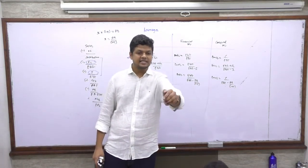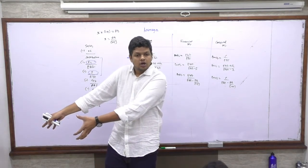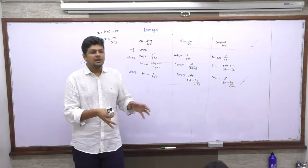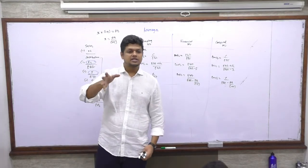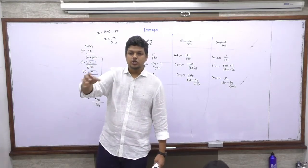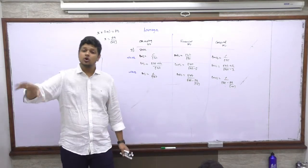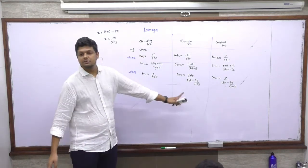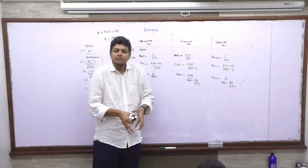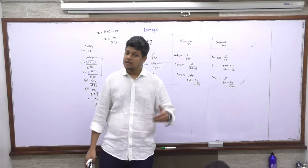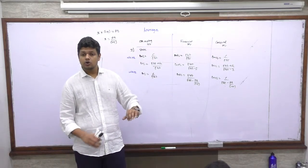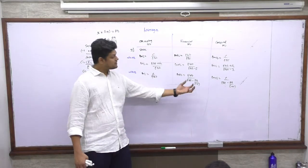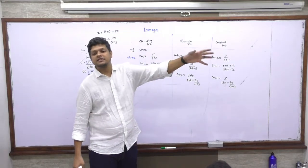Everything else is pre-tax except preference dividend which comes from the post-tax amount. I have two choices: bring everything post-tax, which doesn't make sense because tax will hide the impact of leverage; or bring everything pre-tax. So I bring preference dividend to pre-tax by dividing by (1 minus t). So suppose preference dividend is 100 rupees and tax rate is 30%. The 100 is post-tax, which is 70%. To find 100%, I use preference dividend divided by (1 minus t) to get the pre-tax amount. Gross into (1 minus t) gives net; so net divided by (1 minus t) gives gross.